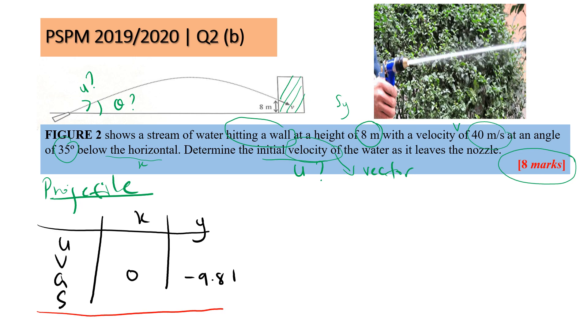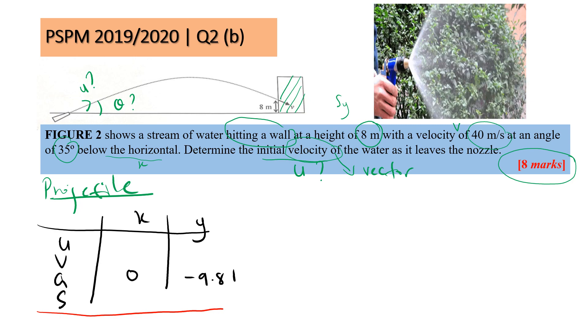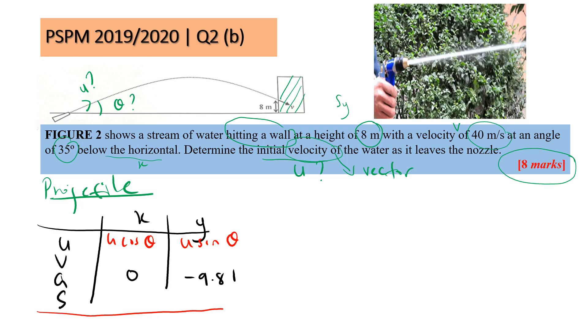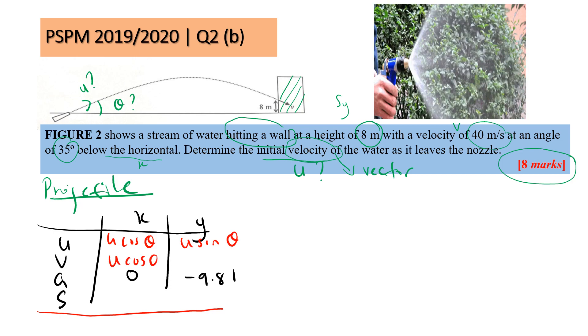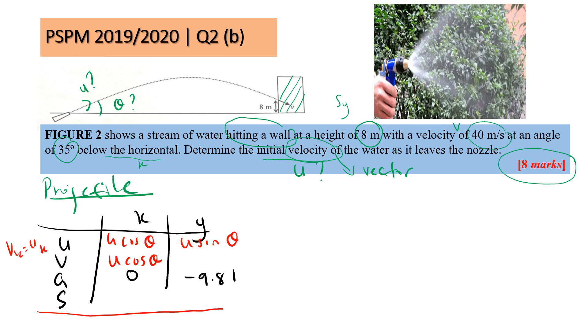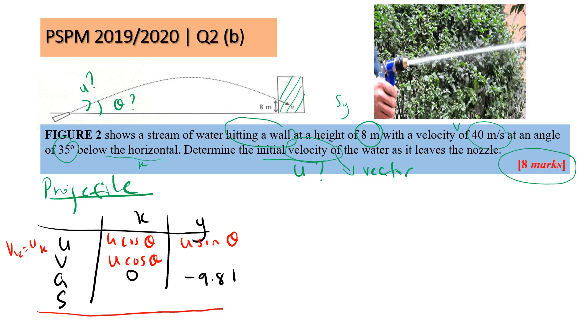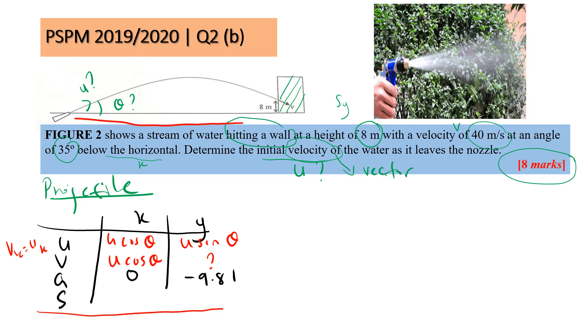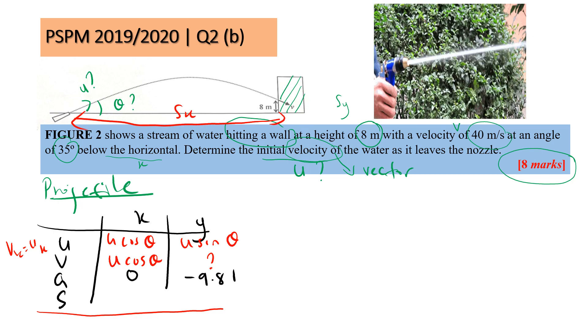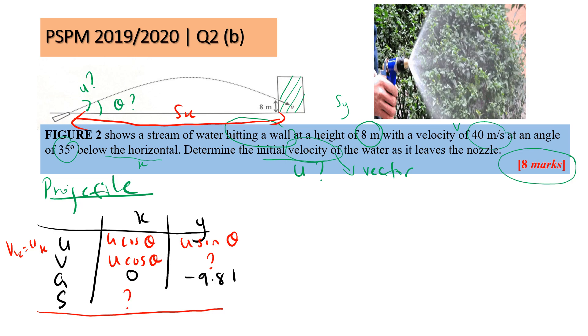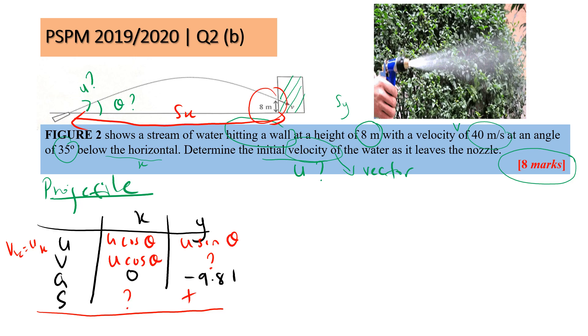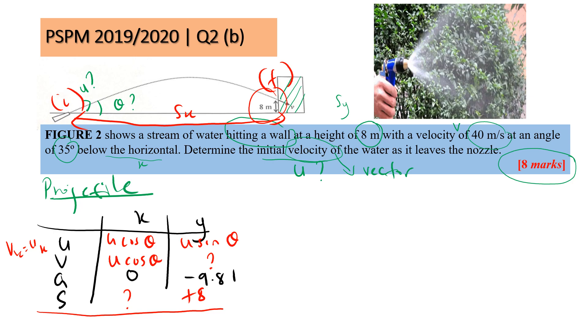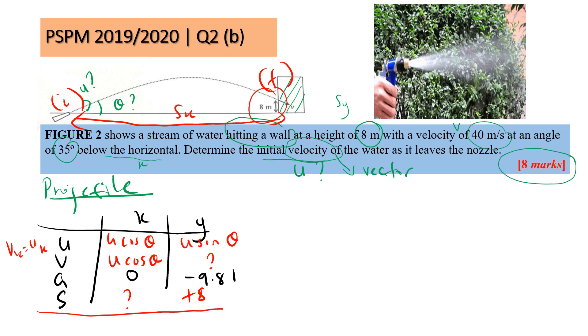UX is U cos theta, UY is U sin theta. My VX equals UX. My VY is always unknown because VY at different levels have different values. My SX is from here to here, this is unknown. How about my Y component? This is 8. So 8 here is positive. Why do I put positive? Because this is my initial, this is my final. It's not back to the original initial reference point.